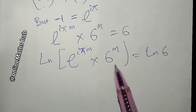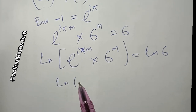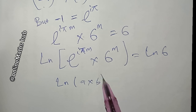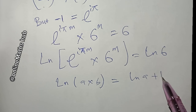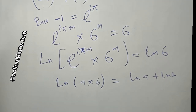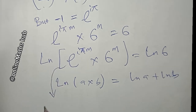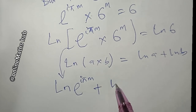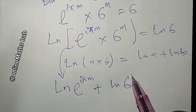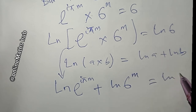I'll use the log product rule: the natural log of a multiplied by b expands to natural log of a plus natural log of b. Expanding, I get natural log of e to the power i·π·m, plus natural log of 6 to the power m, equal to natural log of 6.